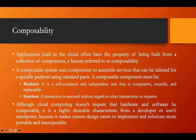Composability can be achieved by two properties of composable components. The first property is modular and the second is stateless. Modular means it is a self-contained and independent unit that is cooperative, reusable, and replaceable. Modular means some sort of module which is self-contained as well as an independent unit — not dependent on any other unit or module in the cloud computing environment or cloud computing stack.